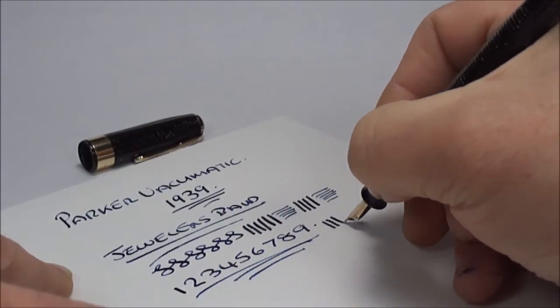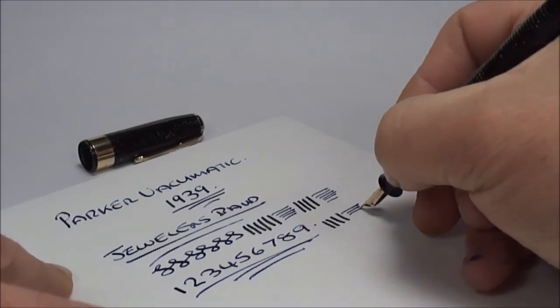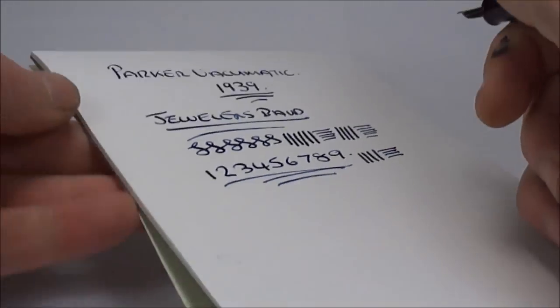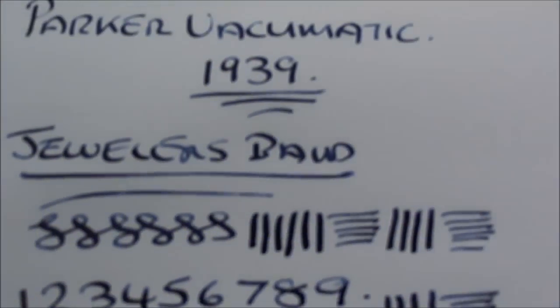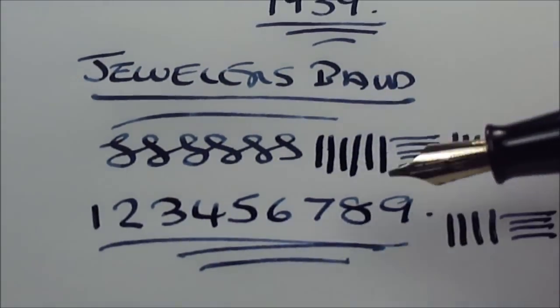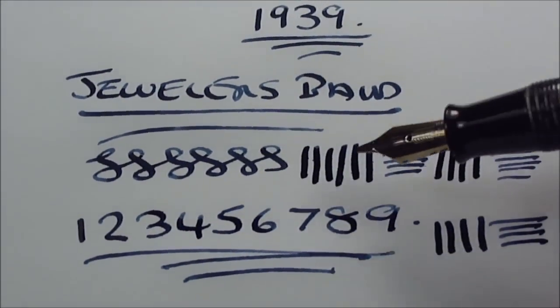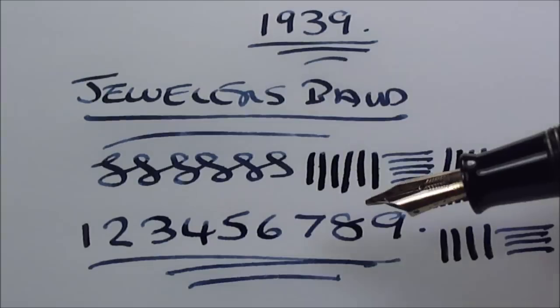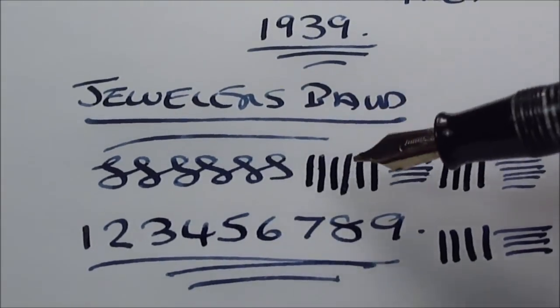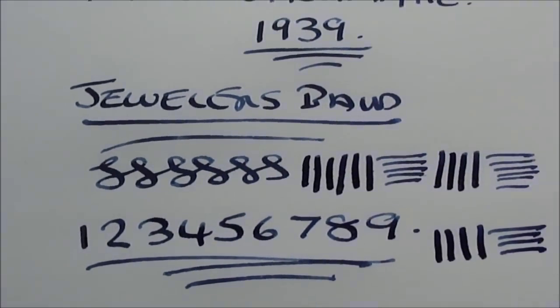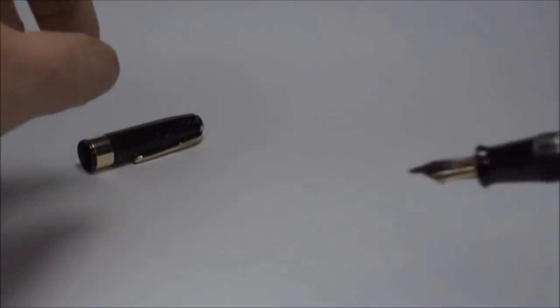So there we go. Downward strokes, nice and thick. On the cross strokes, quite a thin line. So, you can see there, we've got quite a variation in lines. The downward stroke being thick. The cross strokes being quite thin. So, we'll pop that to one side.